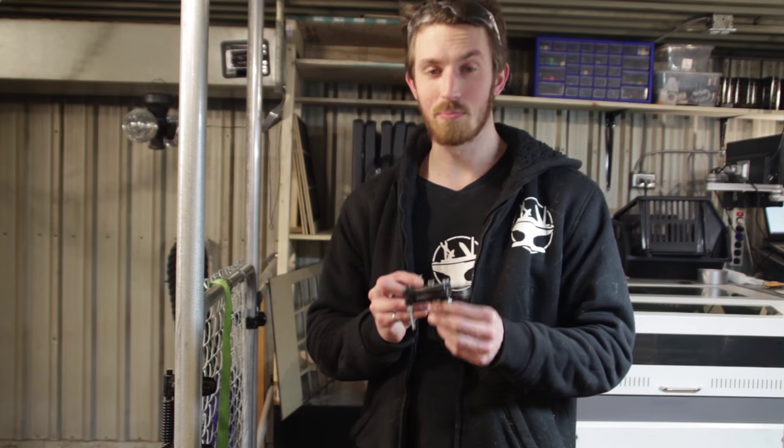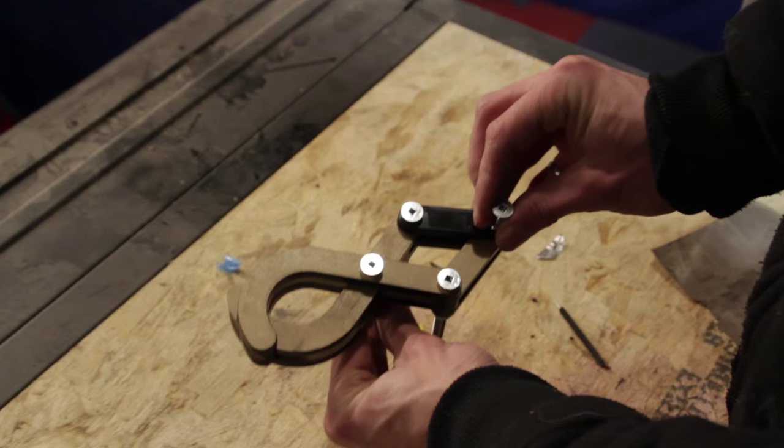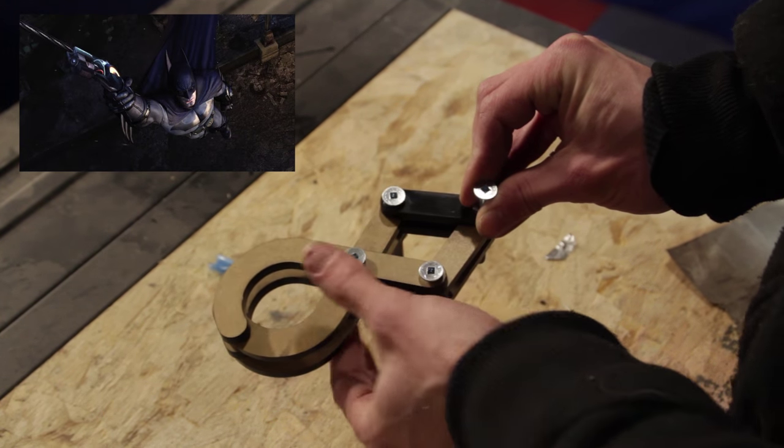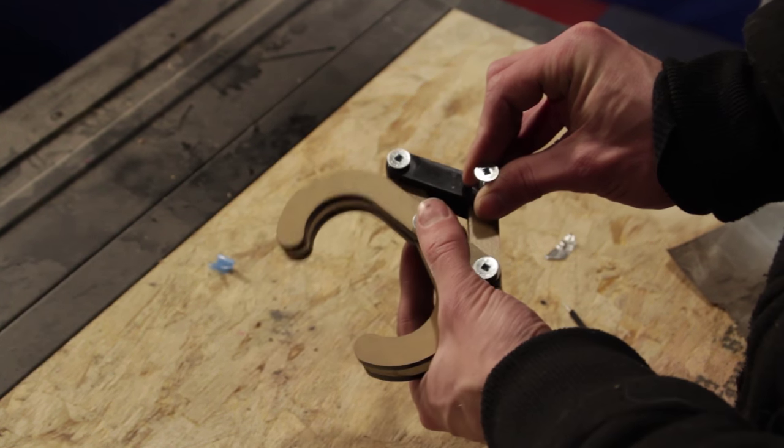Alright, so for this Make It Real we're going to make a grappling hook repelling device. This is because Batman vs Superman is coming out next month and we like to make a themed gadget.